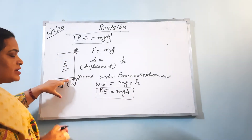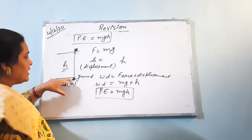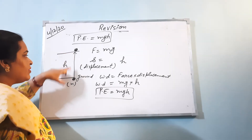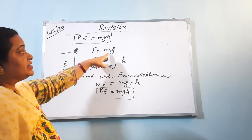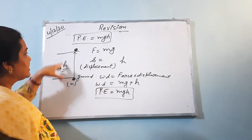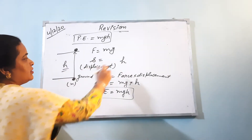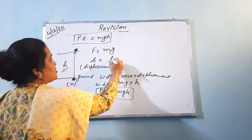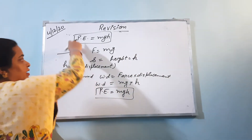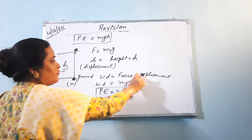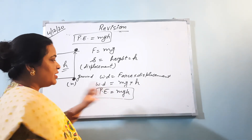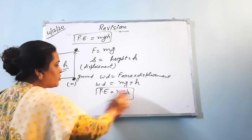You will write: consider a body of mass m, let it be raised from the ground to height h. When we raise it, we apply the minimum force equal to the weight of the body. The displacement is h because we are raising it vertically. Work done equals force into displacement, so potential energy equals mgh. That is the derivation for potential energy.